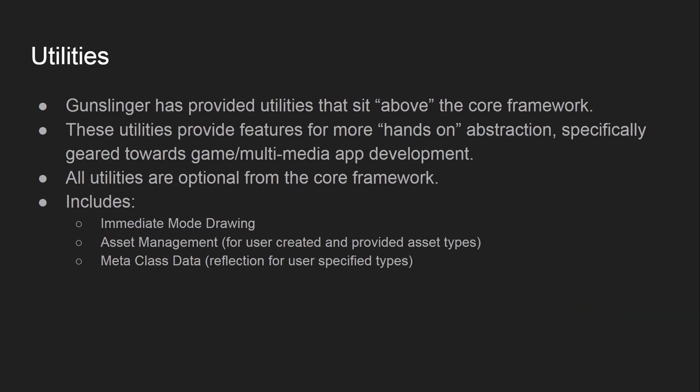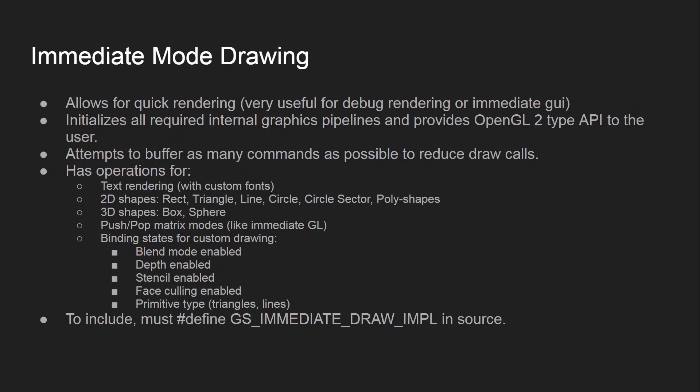Gunslinger has optional utilities on top of the core framework geared more towards hands-on game development abstraction. These include immediate mode drawing, asset management for user-created custom asset types, and a meta-class data utility for reflecting any custom user data. The immediate mode drawing allows for quick rendering — very useful for debug rendering and immediate GUI. The benefit is that it doesn't require the user to set up the explicit pipeline for all the different debug rendering capabilities; all of that is handled for you.